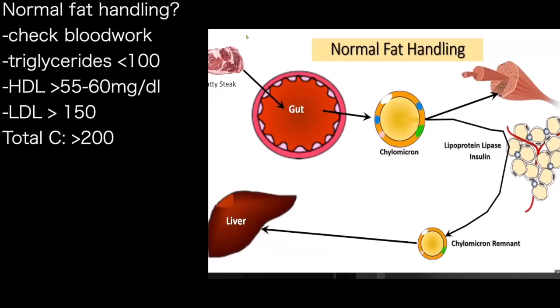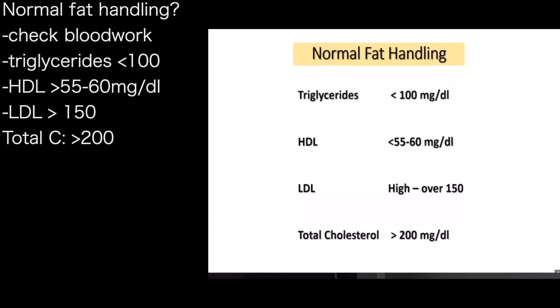You would know you have normal fat handling by looking at a few key pieces of your blood work. You can look at your triglycerides — if your triglycerides are less than 100, if your good cholesterol or HDL is greater than 55 — not less than 55, I just noticed that I made a mistake. And invariably, when you have this situation, the so-called bad cholesterol — which I call the other good cholesterol — is over 150, and your total cholesterol usually is over 200.